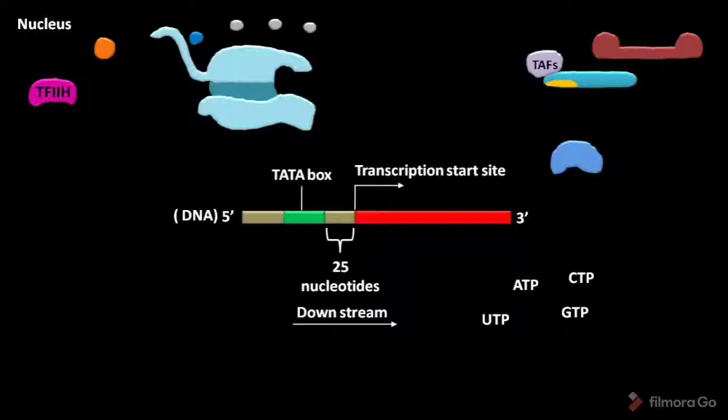Before transcription initiation, general transcription factors assemble at the promoter. At the beginning of general transcription factor assembly, the TBP subunit of TFIID recognizes the TATA box.